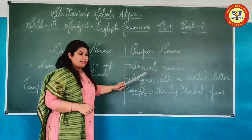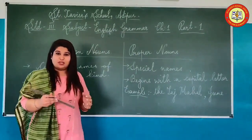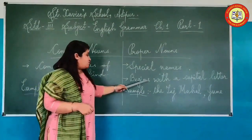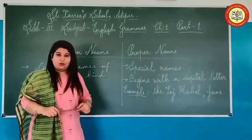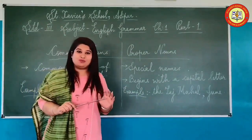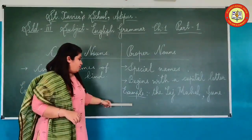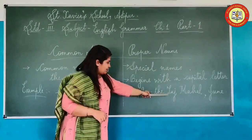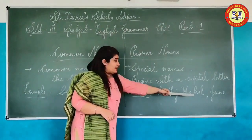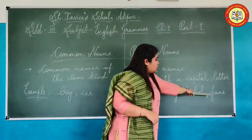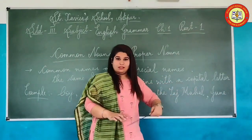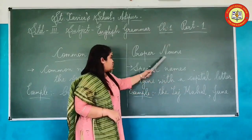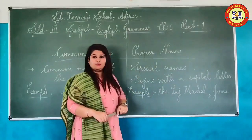Secondly, Proper Nouns. It has special names — the special name of one thing. They are introduced with a capital letter. Always the proper noun starts with a capital letter. For example, 'Earth' — here you can see I have written capital letters. Secondly, 'July', that is the name of a month. So these special names are called proper nouns.